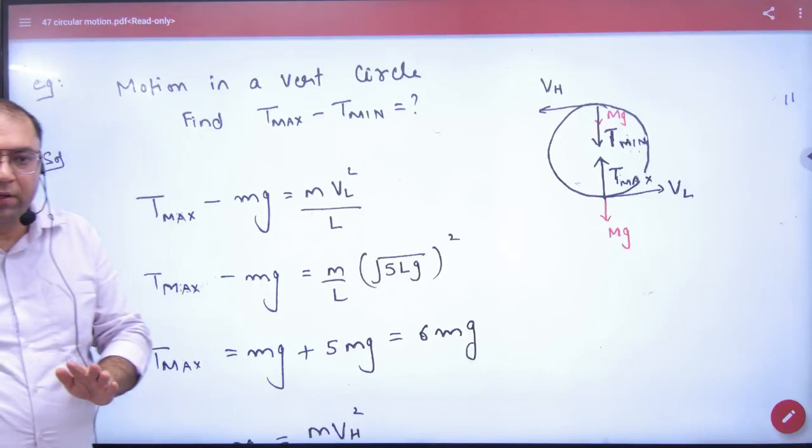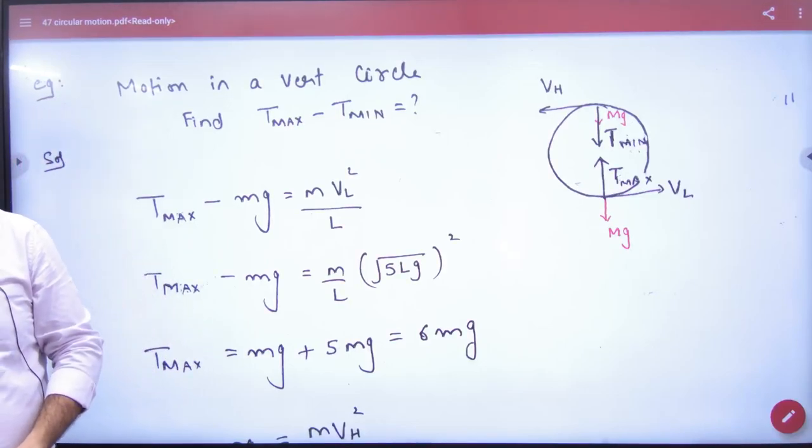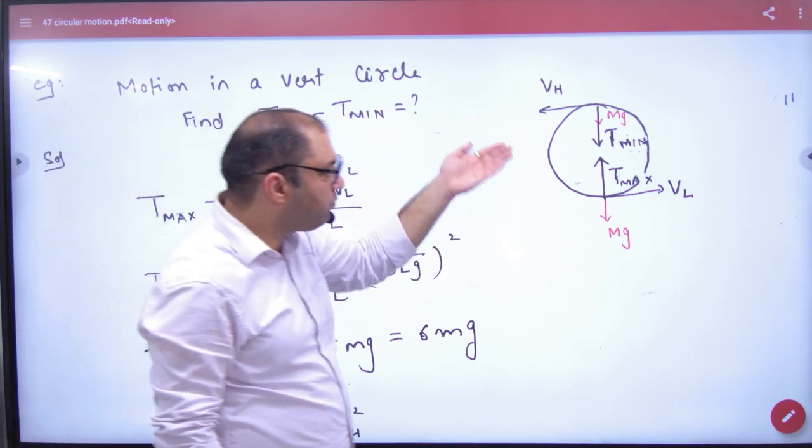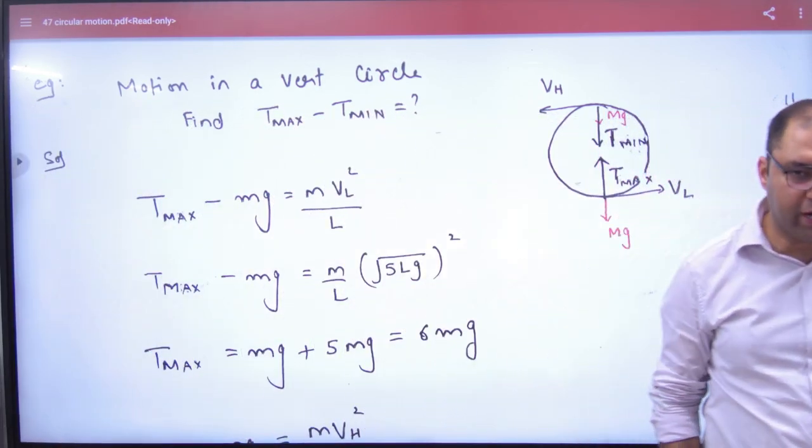There will be a problem that will come in the objective exam. If a body is moving in a vertical circle, then remember the minimum velocities: at the lowest point it's root 5gl, and at the highest point it's root gl.